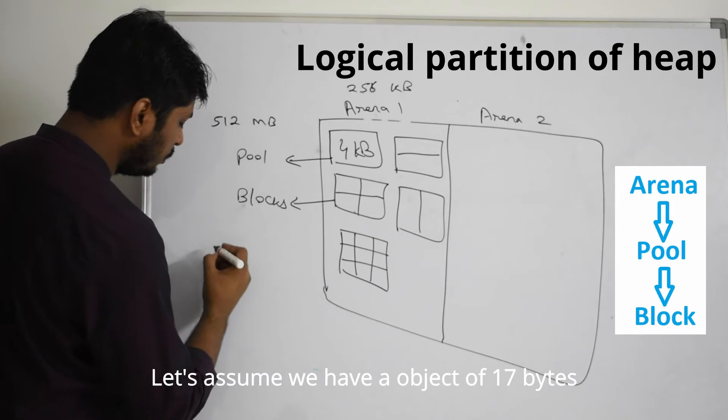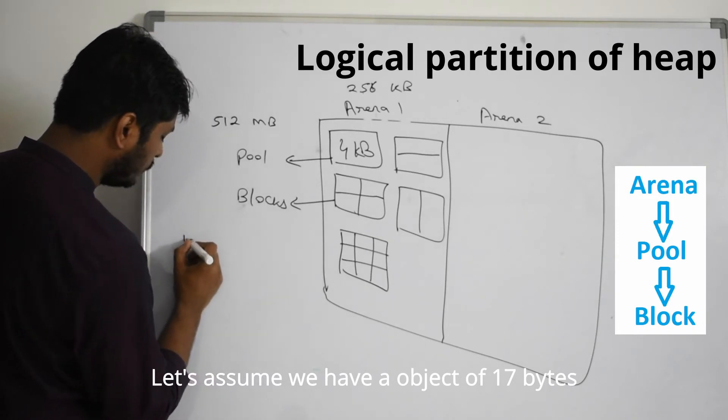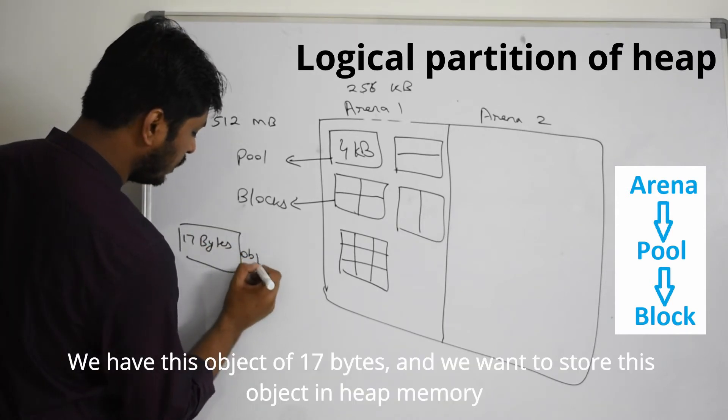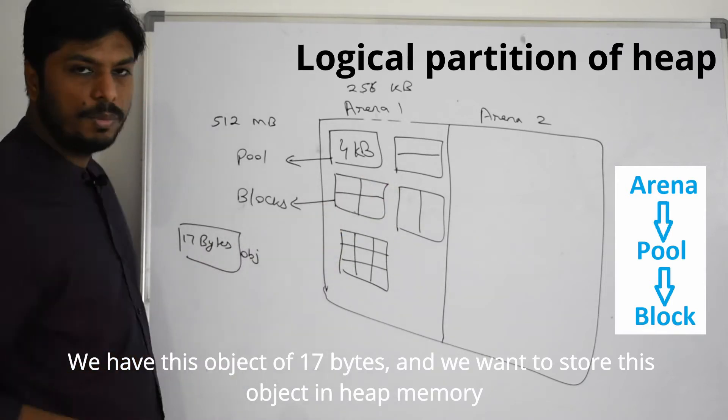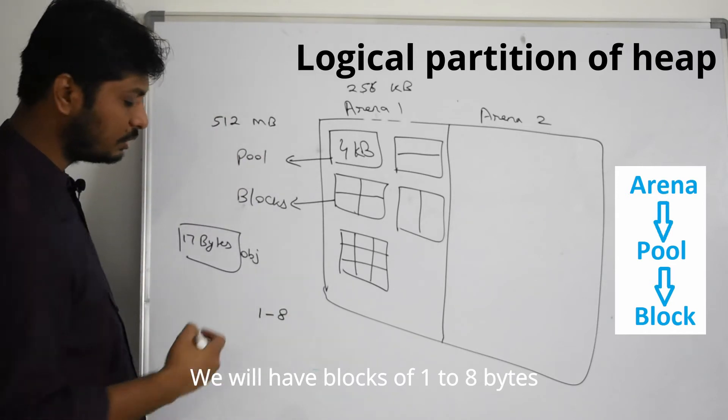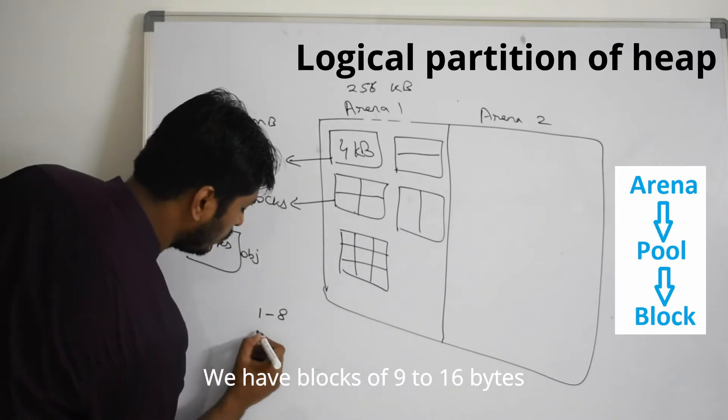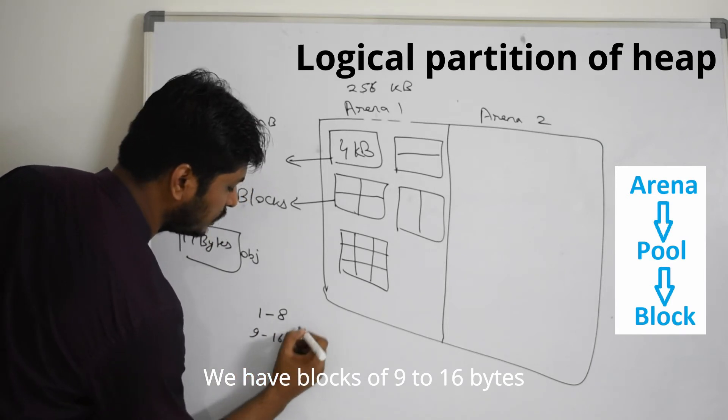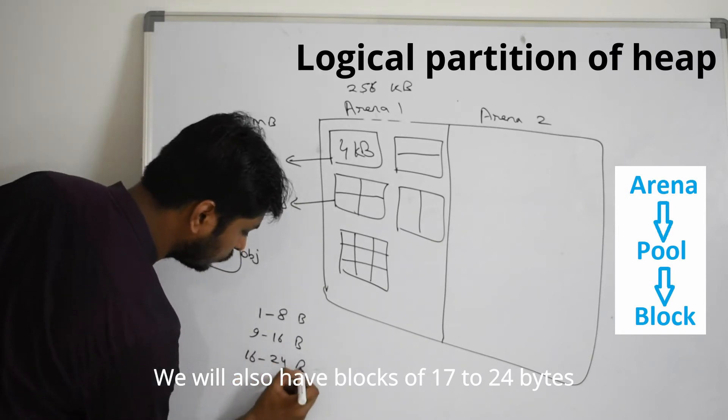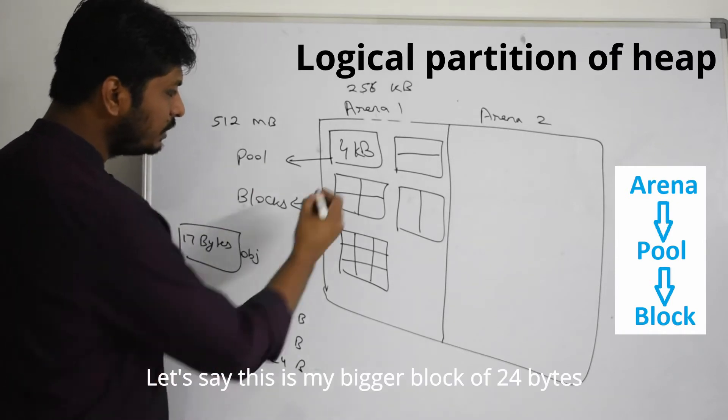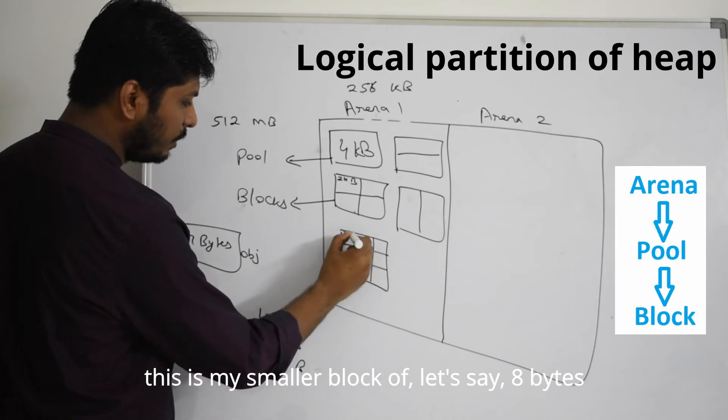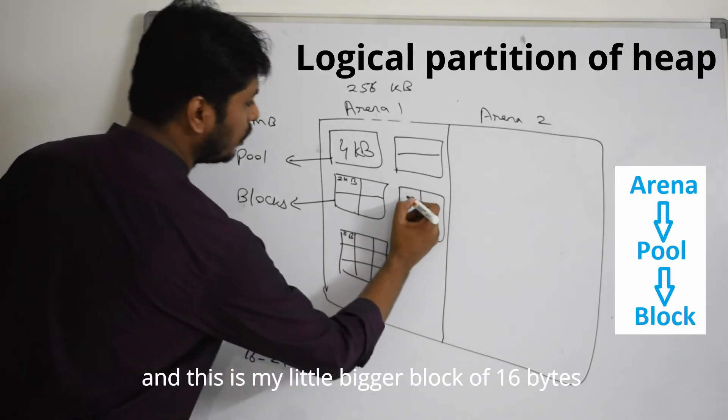Let's assume we have object of 17 bytes. We have this object of 17 bytes and we want to store it in the heap memory. We will have blocks of 128 bytes. We will have blocks of let's say 9 to 16 bytes, 16 to 24 bytes and so on. This is my bigger block of 24 bytes.